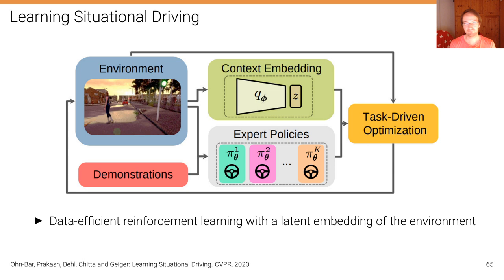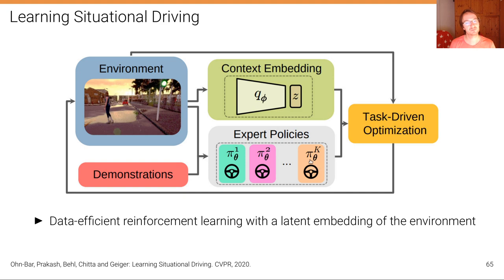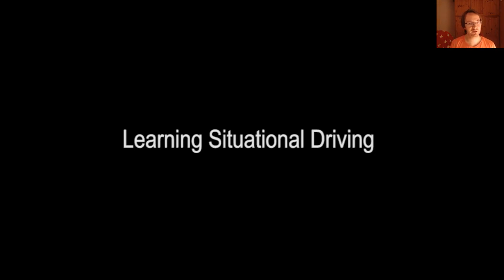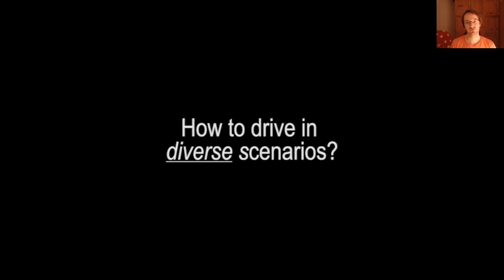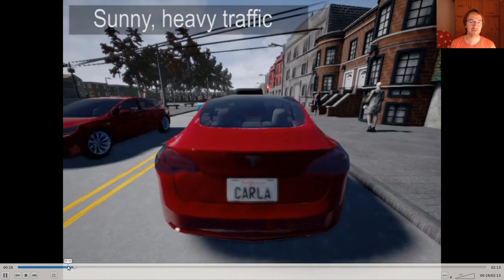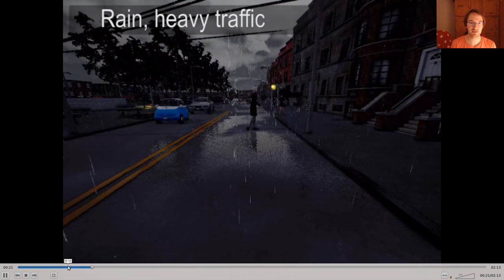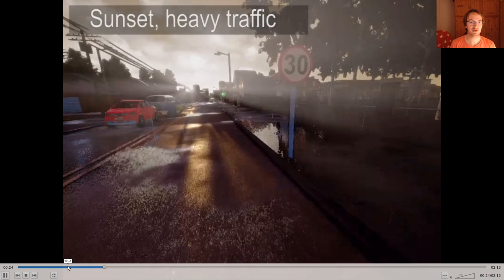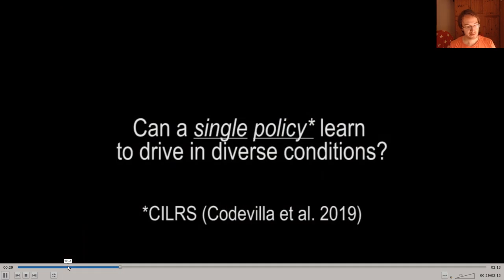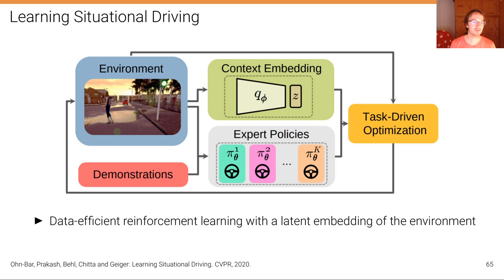VAEs can also learn context embeddings — for example, in a self-driving paper where expert policies should be informed by the environment. By driving around and observing the environment, a VAE learns a reconstruction of the environment, and the latent code learned as a byproduct serves as a useful cue for solving the driving task. This is tested in the CARLA simulator, allowing driving in complex and challenging scenes with high variability, clutter, and pedestrians. That's all for today.